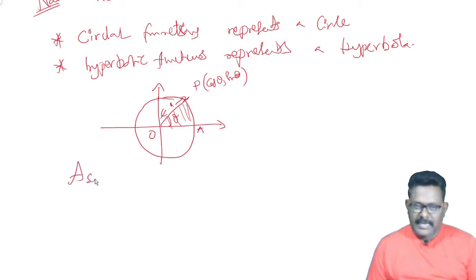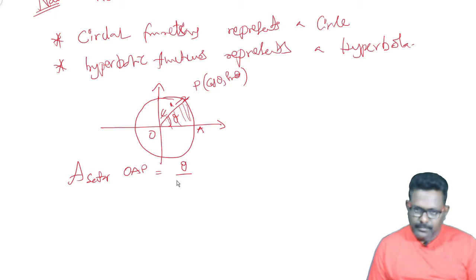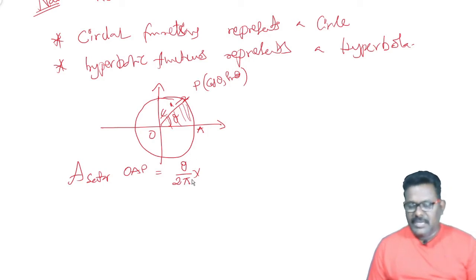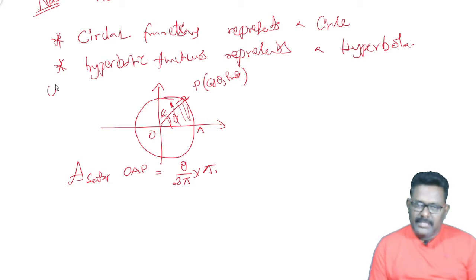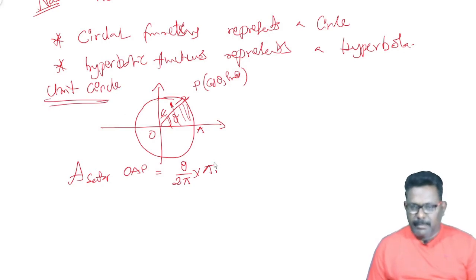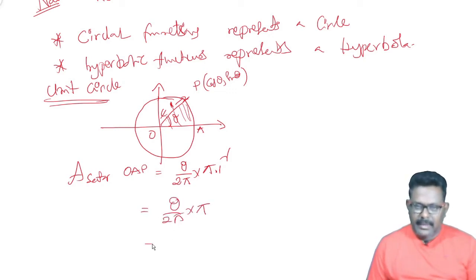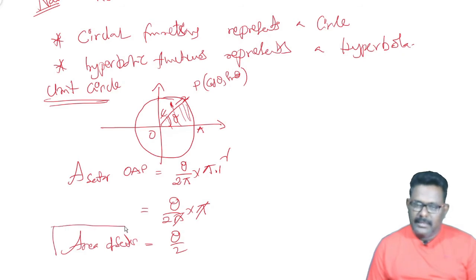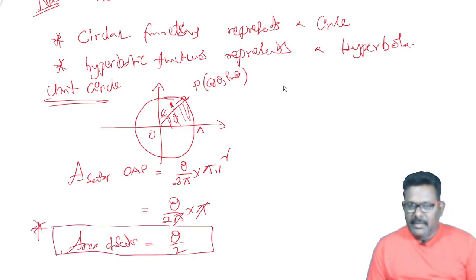The area of a sector equals theta divided by 360 times pi r squared. Since the radius of the unit circle equals 1, r squared equals 1 squared, and the area of the sector simplifies to theta by 2. So the area of the sector of a unit circle equals the angle divided by 2.